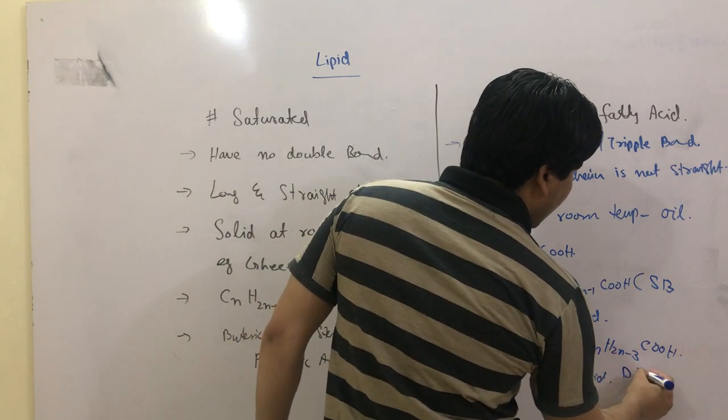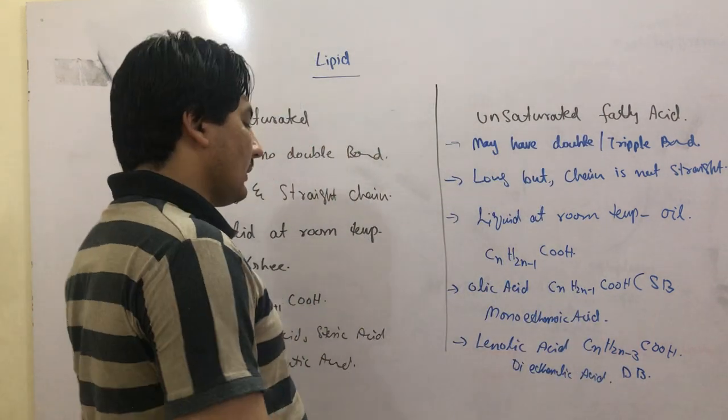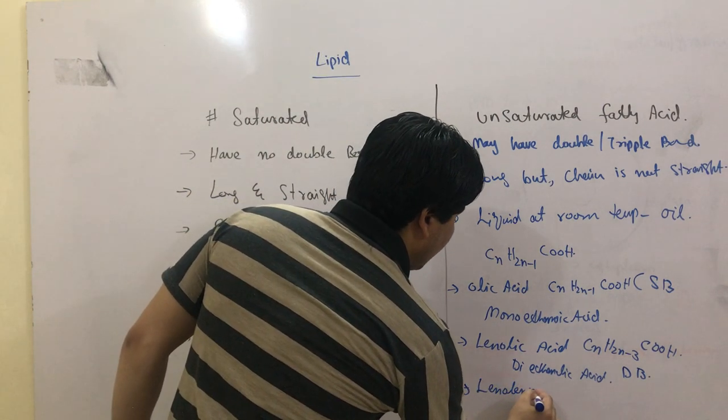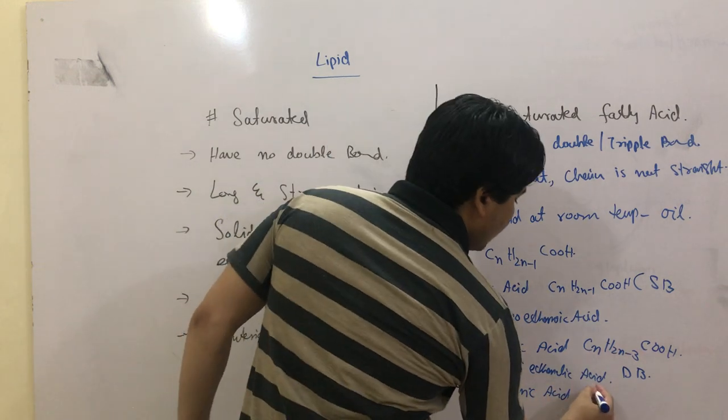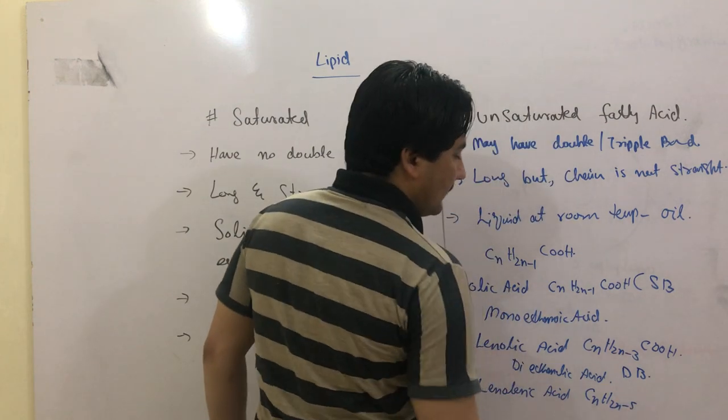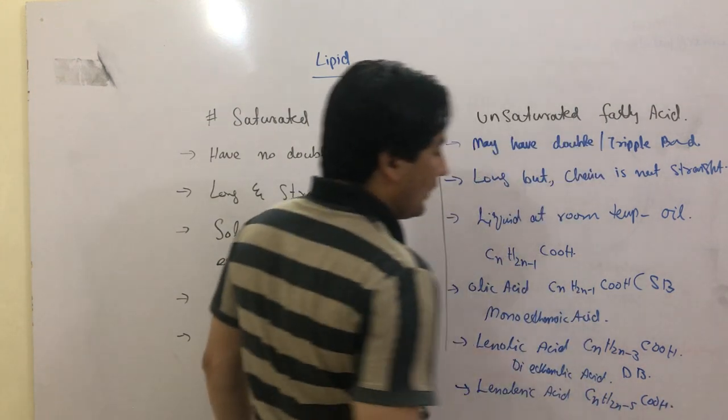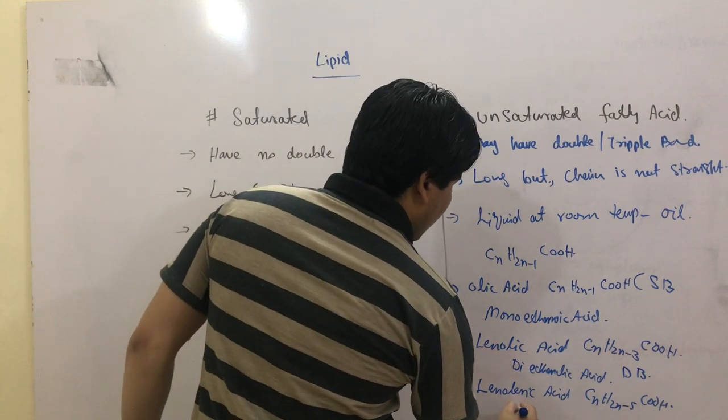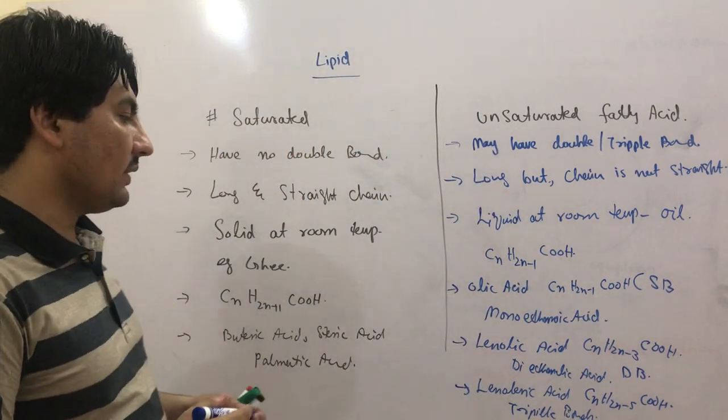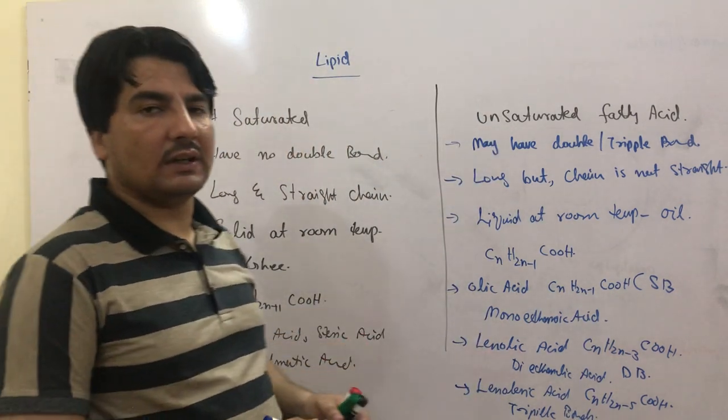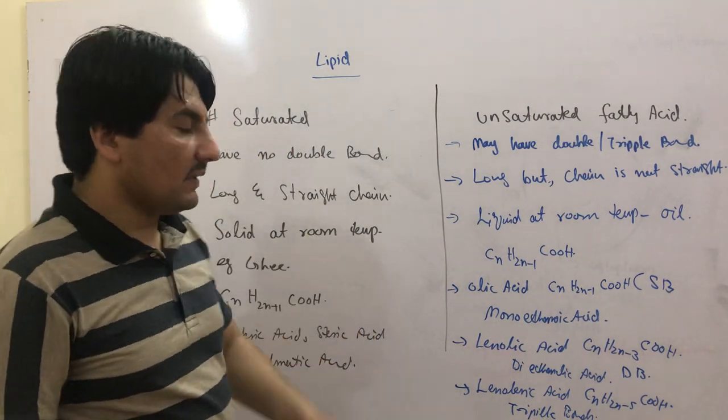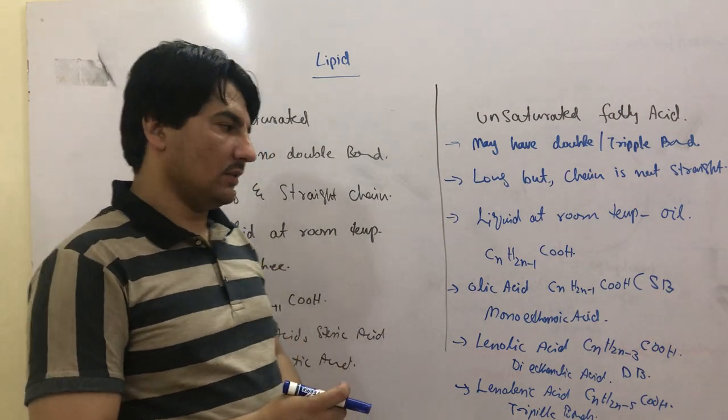Linolenic acid has a triple bond. The formula is C_n H_{2n-5} COOH. These are examples like linolenic acid and sometimes arachidonic acid, which has multiple double bonds.